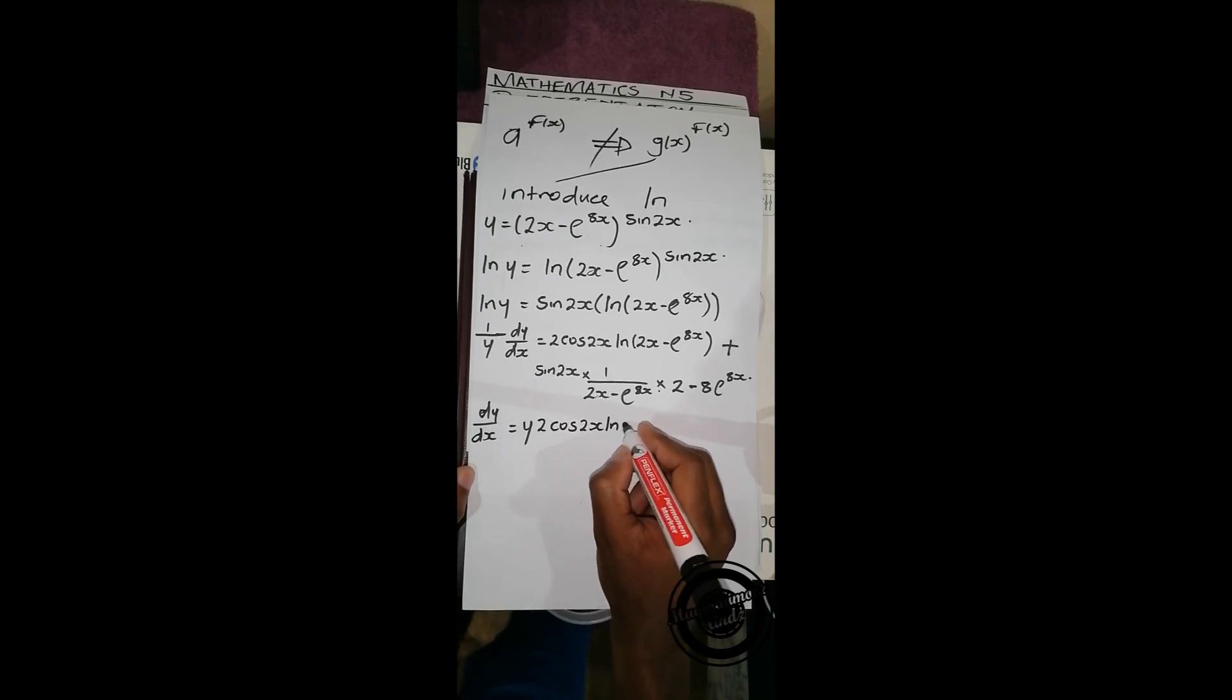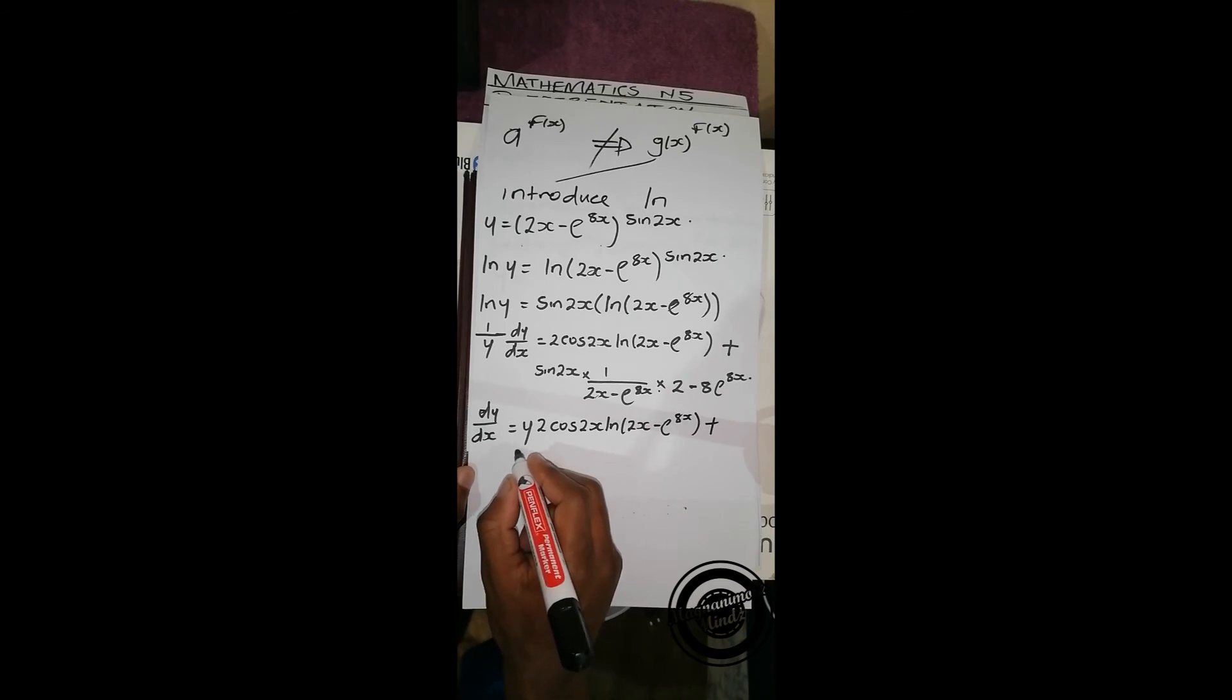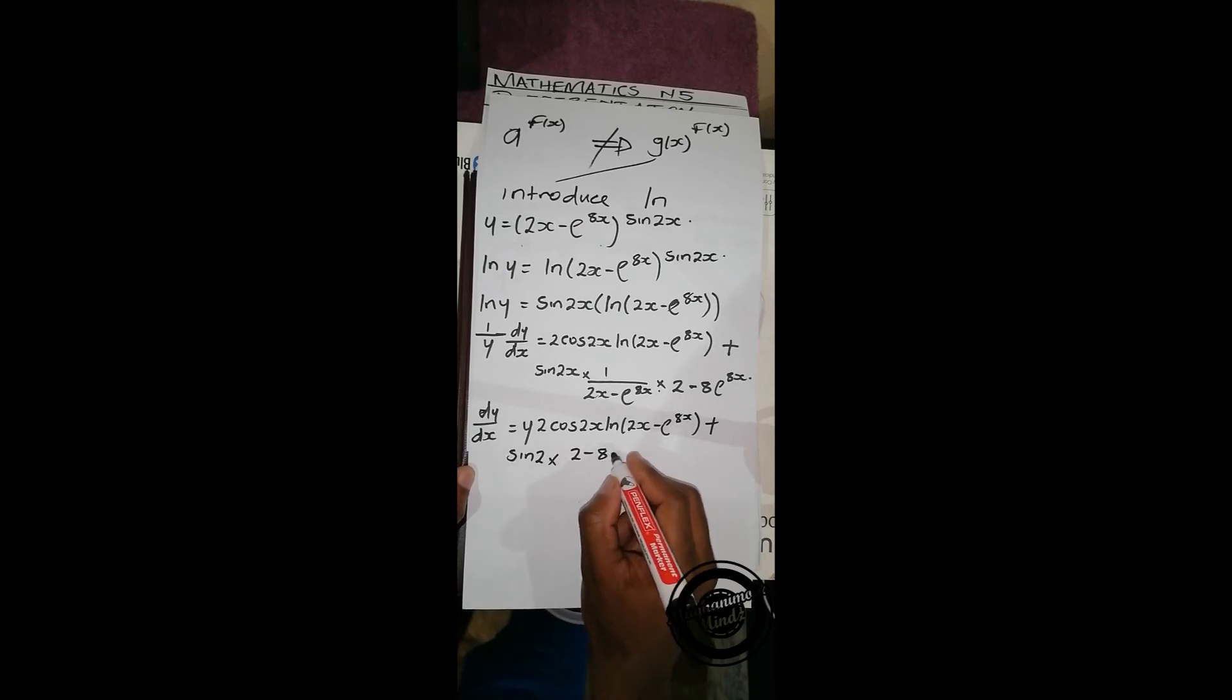times ln(2x - e^(8x)), plus sin 2x times (2 - 8e^(8x)) over (2x - e^(8x)).